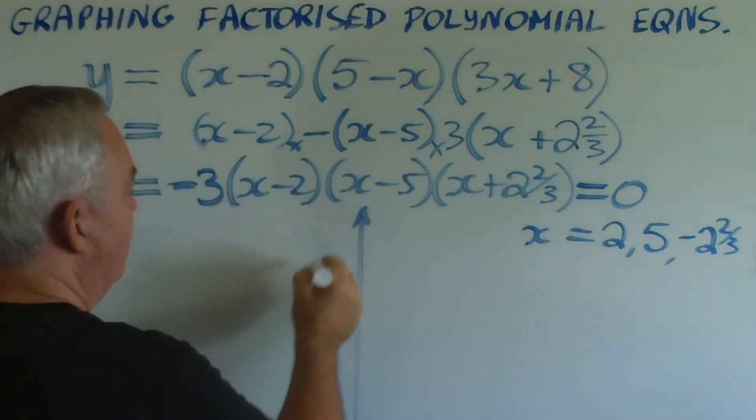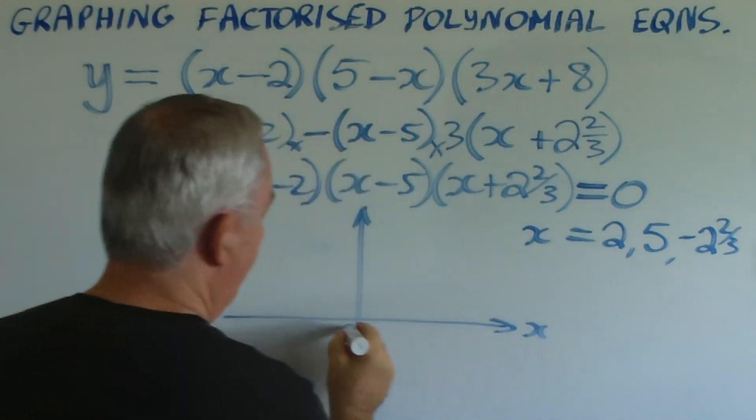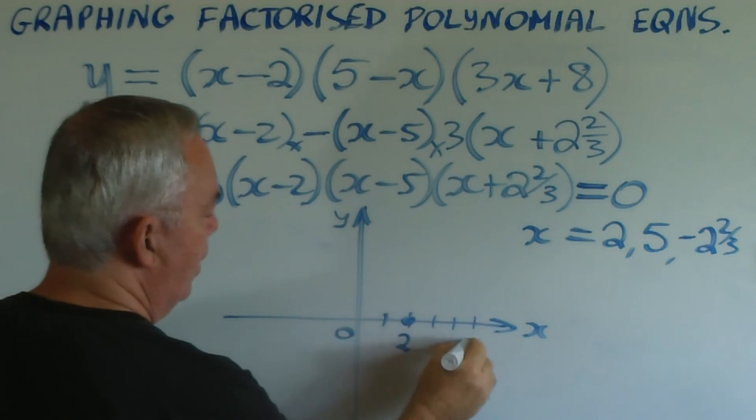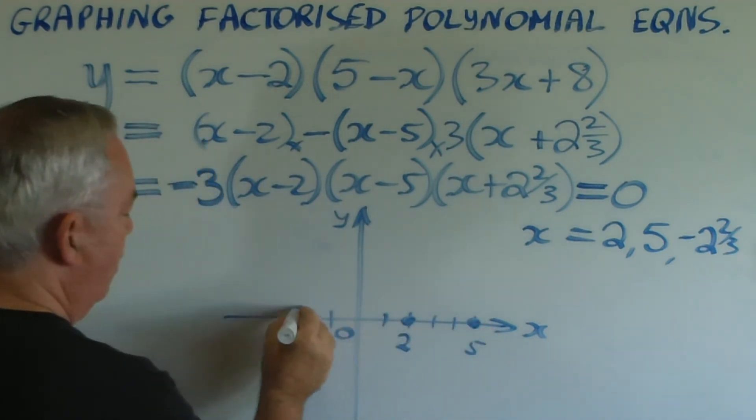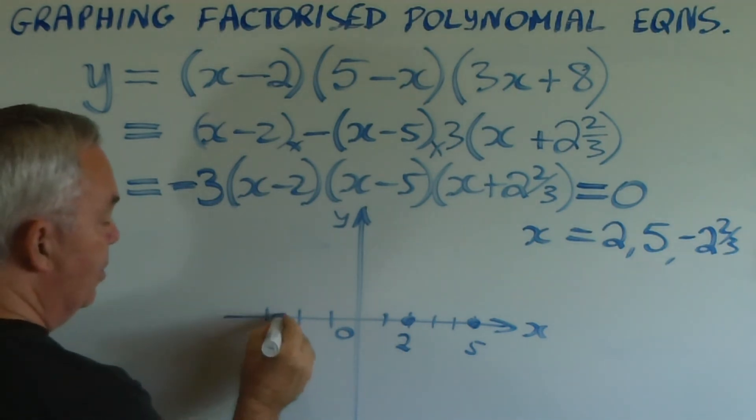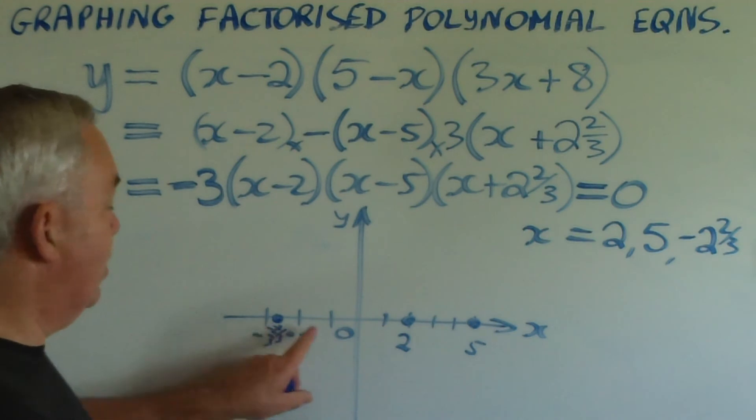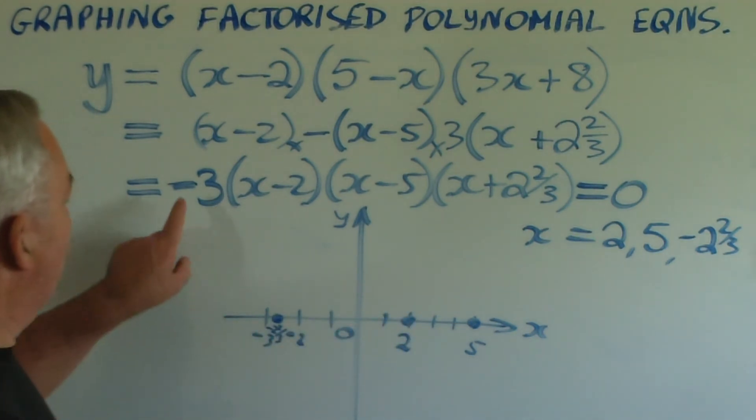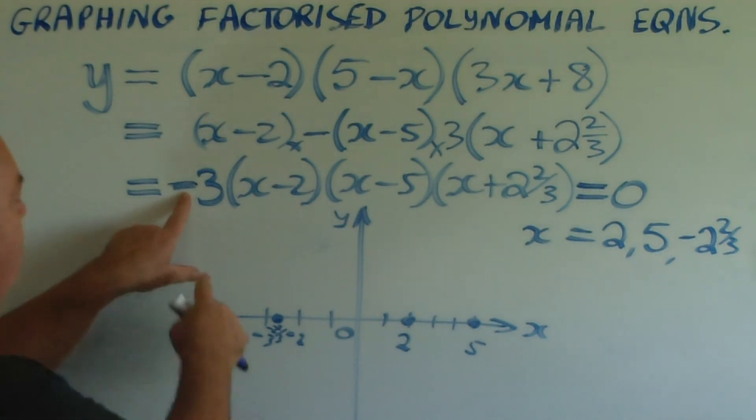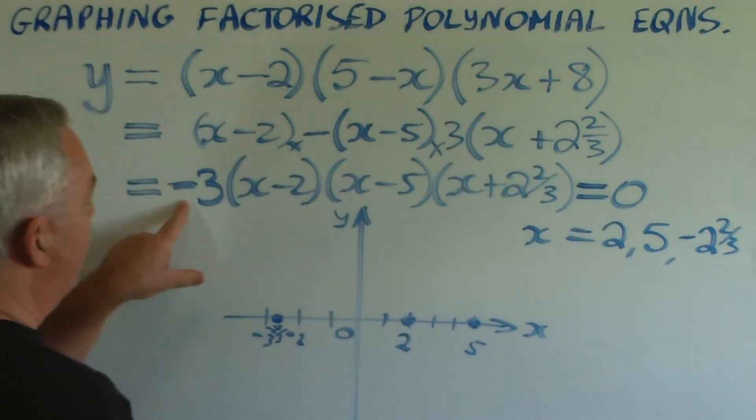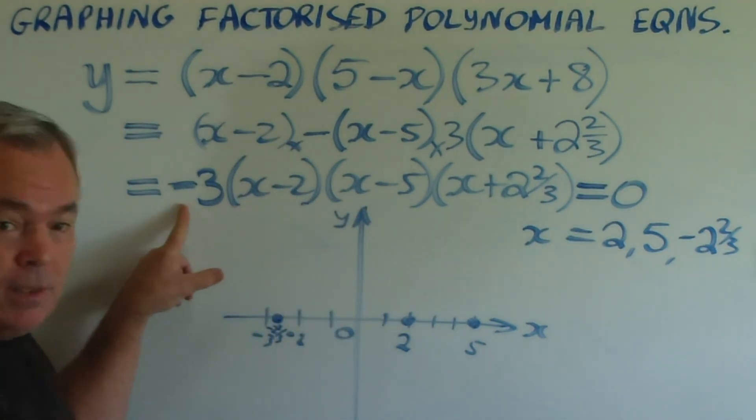We draw the axes. One root at 2. Another root at 5. Minus 2 and minus 3. So minus 2 and 2 thirds would be about there. And our graph has to pass through these three roots, these three zeros, these three points. The leading coefficient of minus 3 means the minus sign means that the graph must head downwards at the right. As x increases in value, y will increase negatively. And the 3 means it will do so steeply.